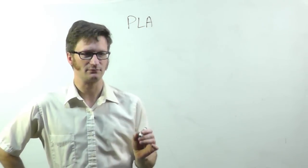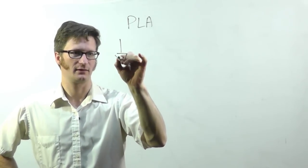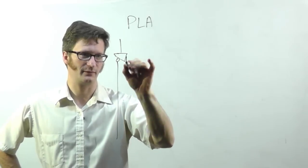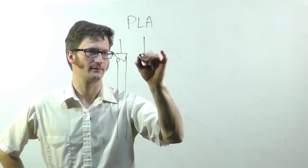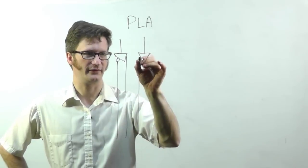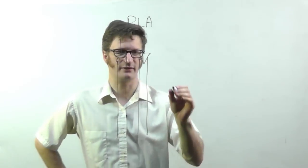So a programmable logic array, PLA for short, has inputs and they come down like this. This is an input buffer where this is the inverted version of it and this is the normal version of it.